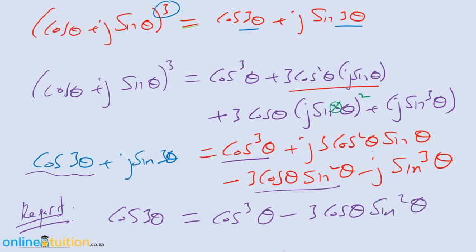And if you compare the imaginary parts on either side, you don't count the j, so you just got a formula for sine 3 theta. Sine 3 theta, there's the imaginary part, which is 3 cos squared sine theta, and then there's a minus sine cubed theta. And there we have a formula for cos 3 theta and a formula for sine 3 theta.